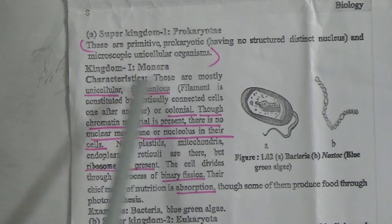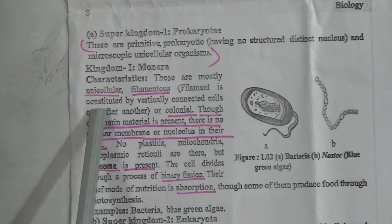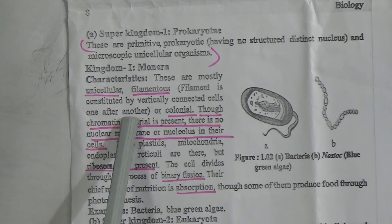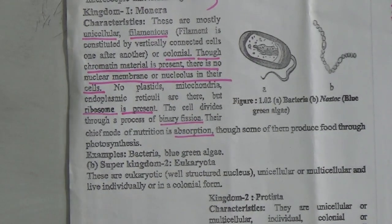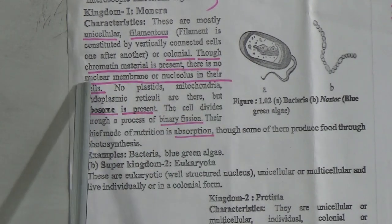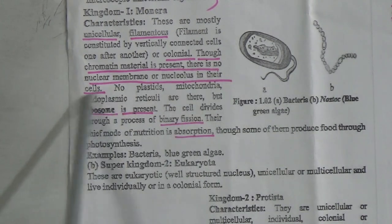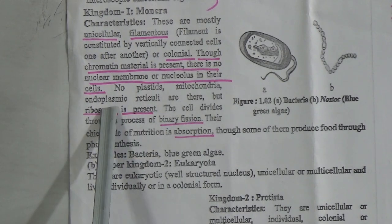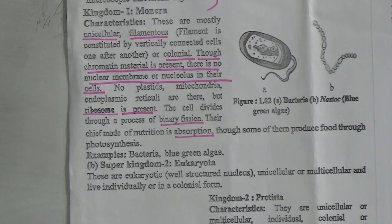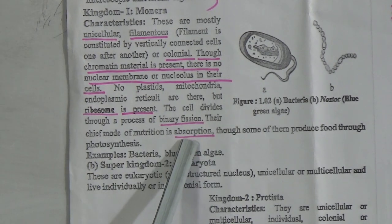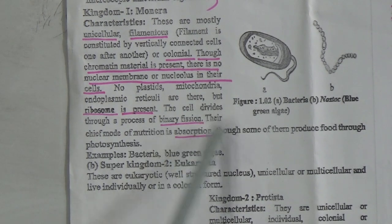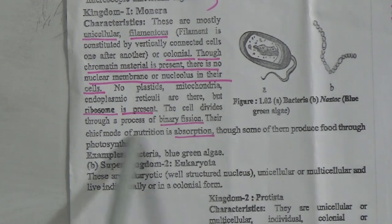Characteristics of Kingdom Monera: they are mostly unicellular or filamentous or colonial. Chromatin material is present, but there is no nuclear membrane or nucleolus in their cells. No plastid, mitochondria, or endoplasmic reticulum are present, but ribosome is present. The cell divides through binary fission. Their chief mode of nutrition is absorption — they take food from other animals or plants. Some of them also produce food through photosynthesis. Examples: bacteria, blue-green algae, etc.